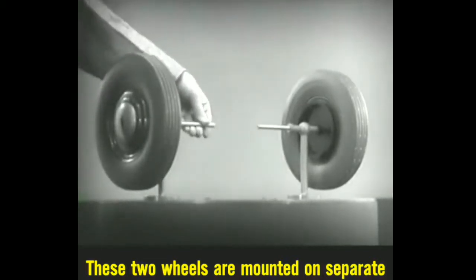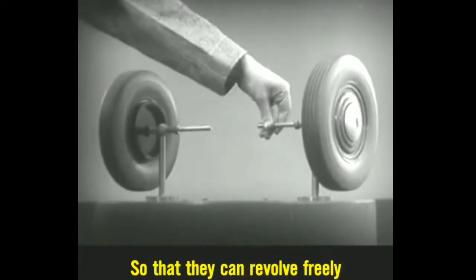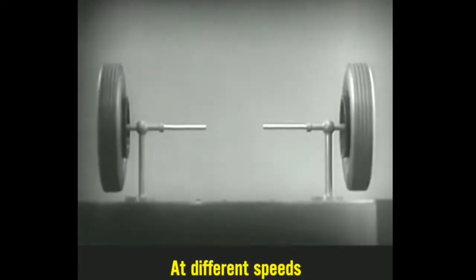These two wheels are mounted on separate axles and supported by a frame so that they can revolve freely at different speeds.